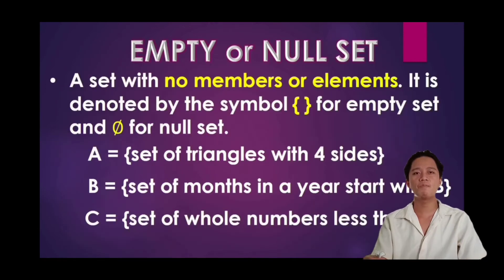We come now to empty set or null set, which is defined as a set with no members or elements. It is denoted by the symbol of bracket for empty set and theta for null set. In set A, set of triangles with 4 sides. We all know that triangles have only 3 sides.